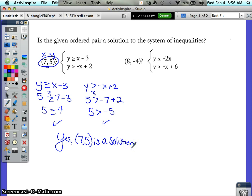Let's try another one. Make sure you're copying these examples down onto your notes. What about (8, -4)? Check to see if (8, -4) is a solution to this system of inequalities: y is less than or equal to -2x, and y is greater than -x plus 6. If we take 8 for x and -4 for y and substitute it in,